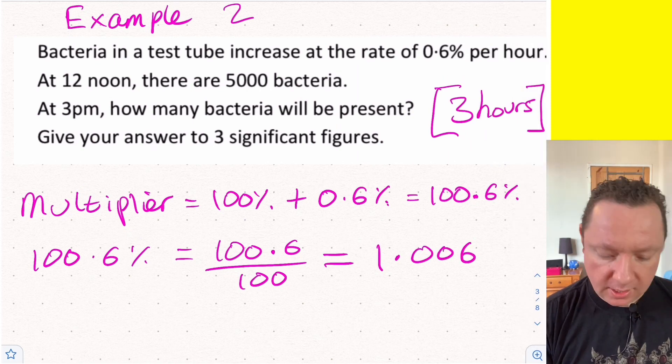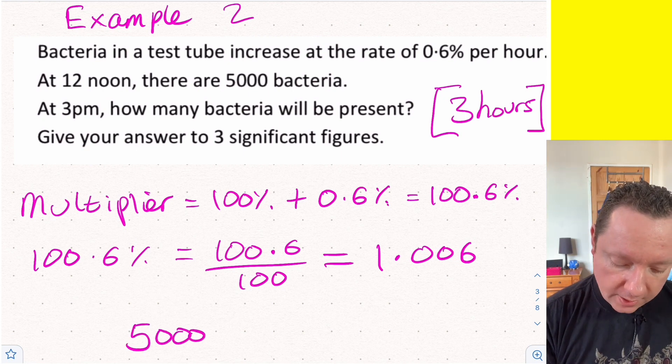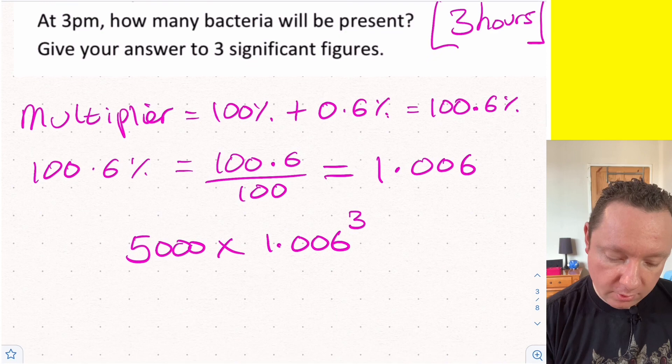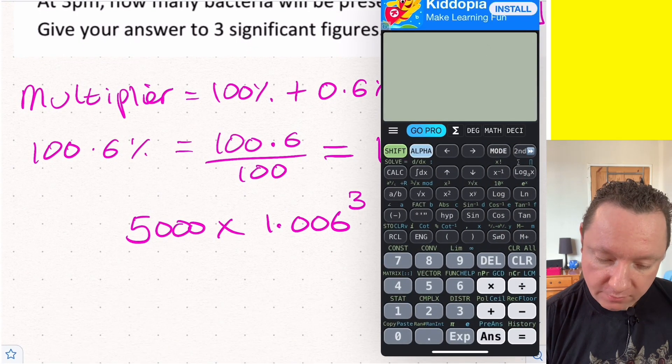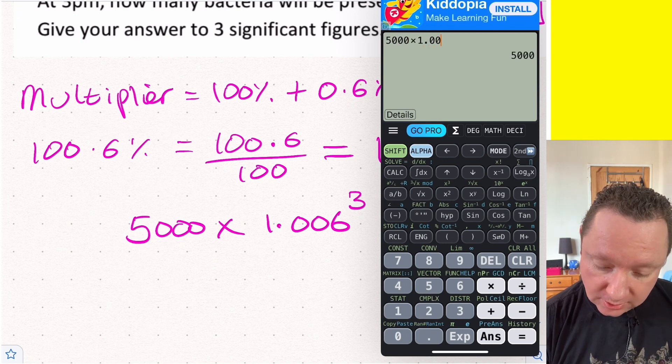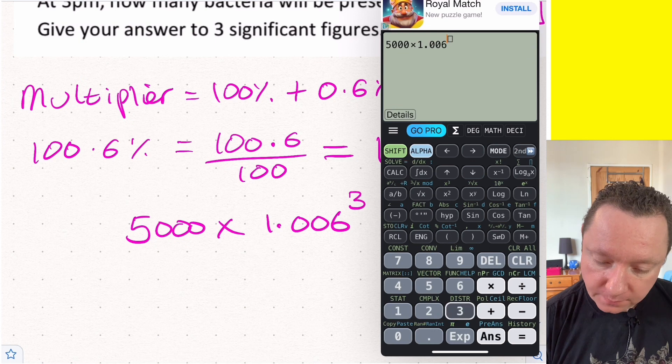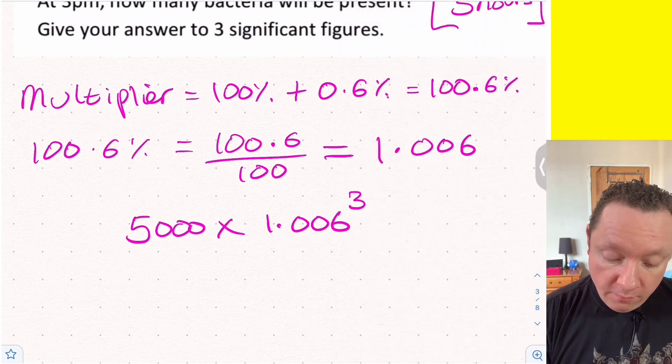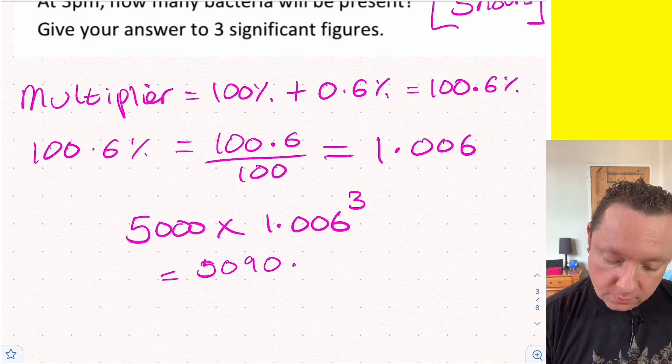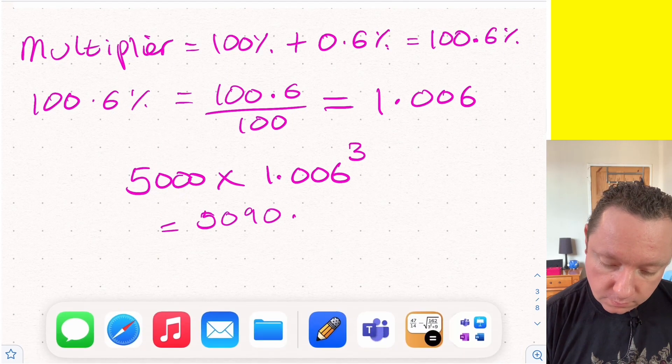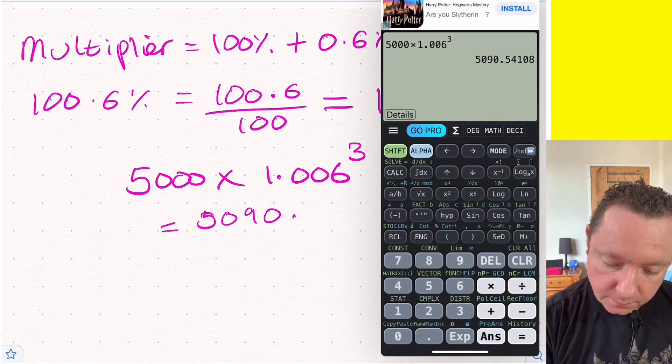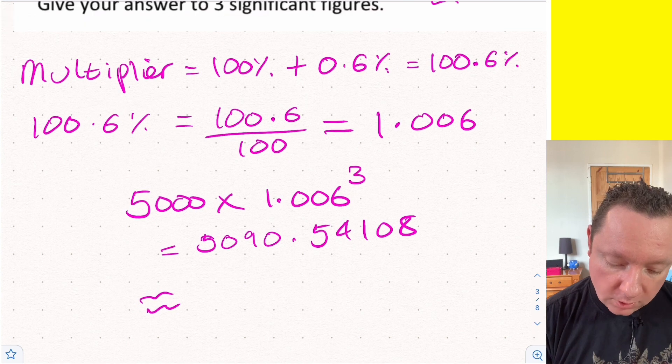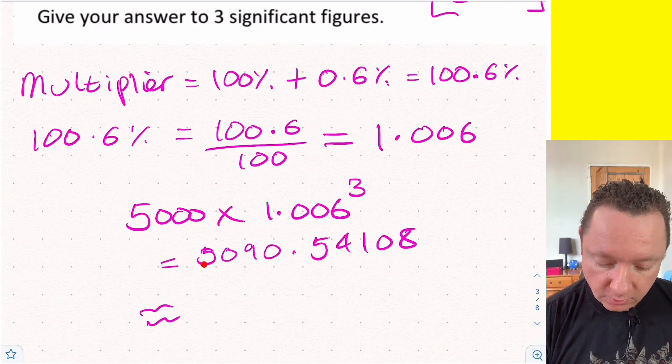Now the question is pretty simple. We'll just do the same as last time. We take our 5000 in the question, we times by our multiplier to the power of the time, which again in this case was 3 - three hours. Get our calculator back: 5000 times 1.006 to the power of 3, and there we get 5090.54108. So to three significant figures we wanted it, so that just means round it at this point - that is 5090 to three significant figures.